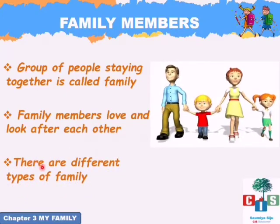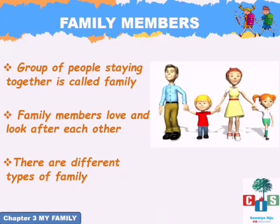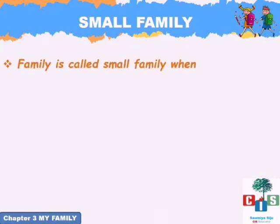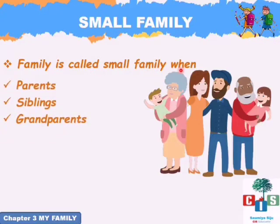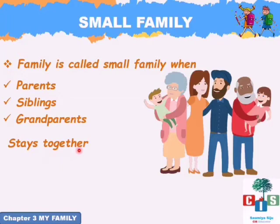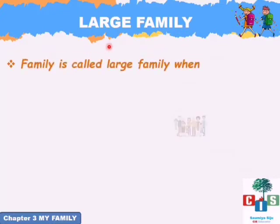There are different types of families. First comes the small family. A family is called a small family when parents, siblings, and grandparents all stay together. In some families, only parents and siblings will be staying — they are also called a small family.